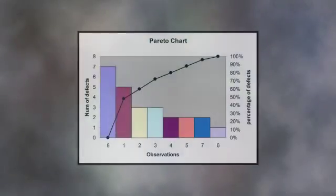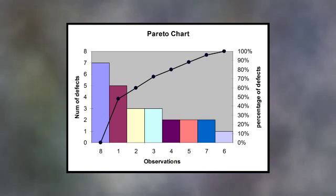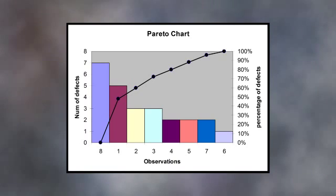A Pareto chart demonstrates the values of whatever it is we're measuring or compiling, and it's represented in descending order. The most important item is the largest bar, the next important item is the smaller bar, and on down the line — typically you'll find the first five or six bars account for about 90% of the value of what you're measuring.